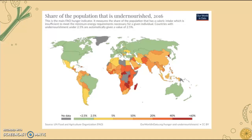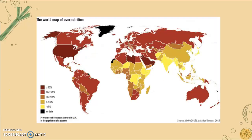This map shows the share of the population that is undernourished. It's fairly concentrated in African countries but also in many Asian countries, Middle Eastern countries, and a few parts of South America. The least undernourished areas are North America, Europe, northern Asia (Russia), Australia, and Brazil. For over-nutrition, the largest portions tend to be in North America and, interestingly, the Middle East and northern Africa, which seems to go against the undernourishment data — though the maps are from different years, 2016 and 2014 respectively.